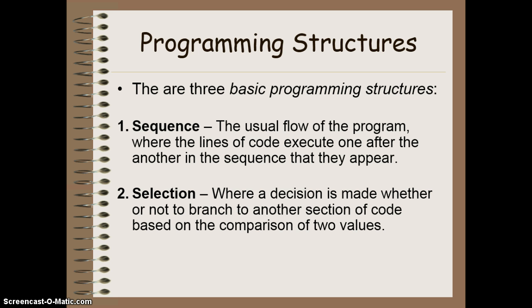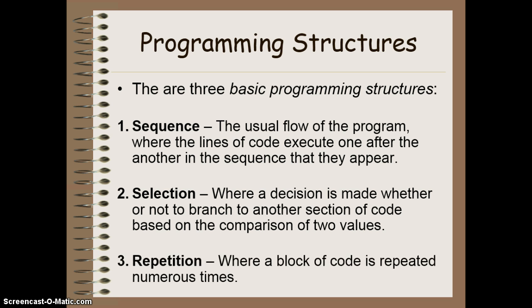The other programming structures we have are selection where we run one section of code or another section of code based on the comparison of two or more values. And the final basic programming structure is called repetition and this is where we repeat a section of code over and over again one or more times based on conditions that are set. And we'll be looking at that in our next lesson.